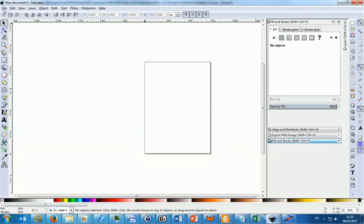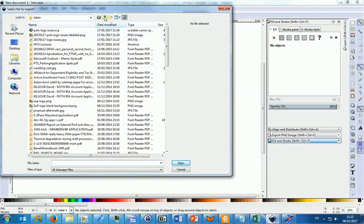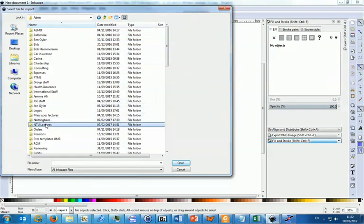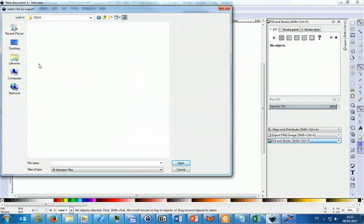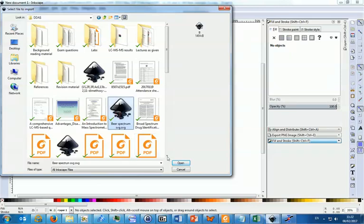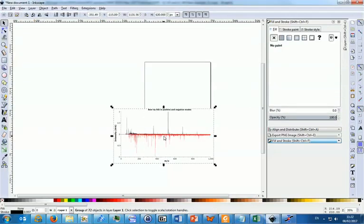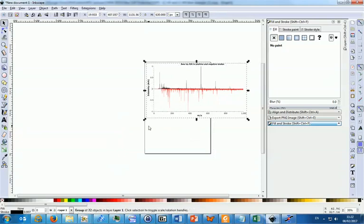Now Inkscape's open, you can import the SVG file of the spectrum you just saved. The first job is to rescale the graph so that it's the right size for fitting on an A4 page. We can do that very precisely in Inkscape, allowing us to make the figure exactly the right size for journals. In this case we're going to make the graphic 15.4 centimeters across.